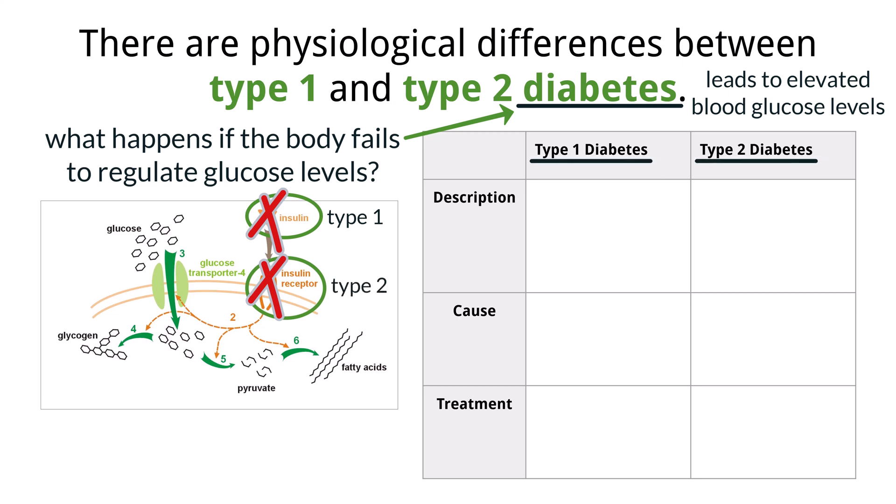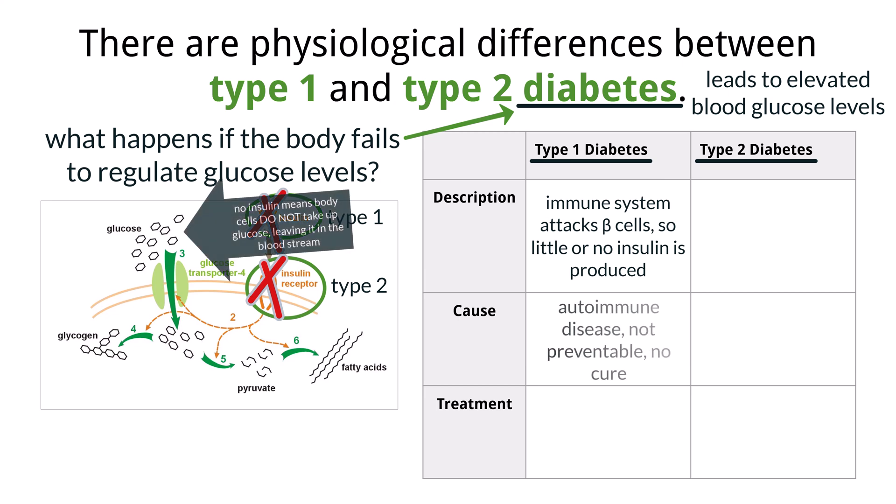Type 1 and type 2 diabetes each have distinct physiological characteristics. In type 1 diabetes, the immune system destroys the insulin-producing beta cells in the pancreas, resulting in little or no insulin production. A lack of insulin prevents body cells from taking up glucose, because with low insulin levels there is less insulin binding to insulin receptors, meaning fewer GLUT4 proteins are activated to allow glucose into the cells. This is problematic because glucose is required for cellular respiration and production of ATP. This condition usually develops in childhood and requires insulin injections for treatment.